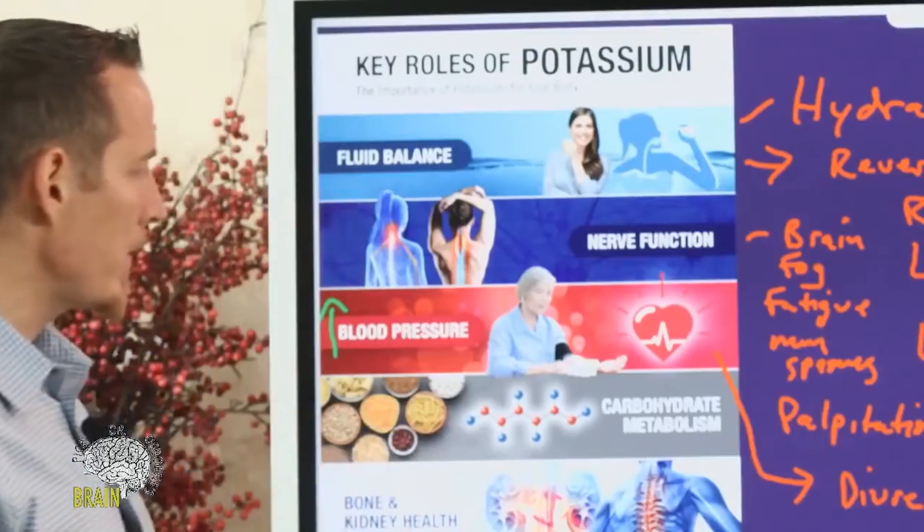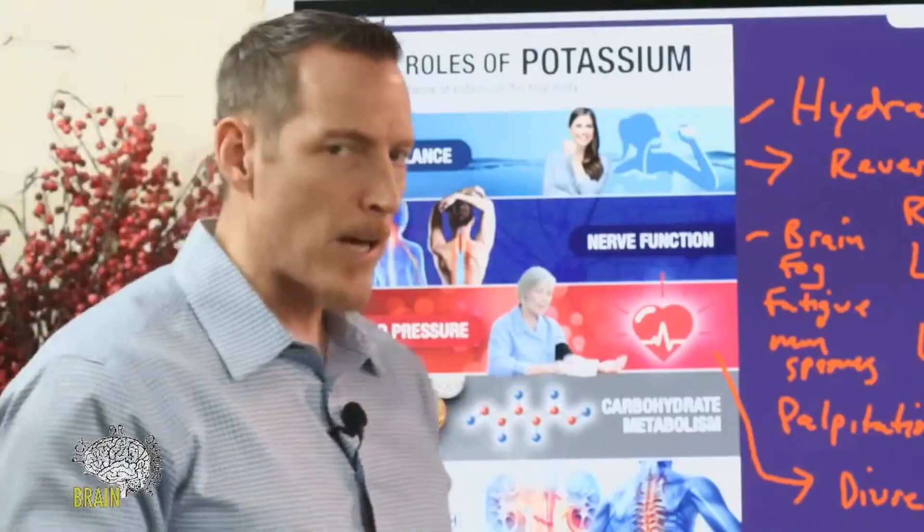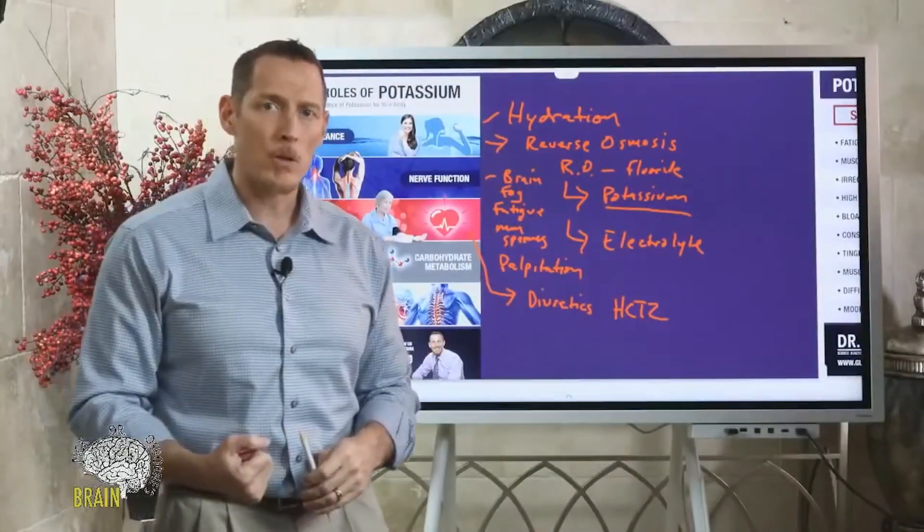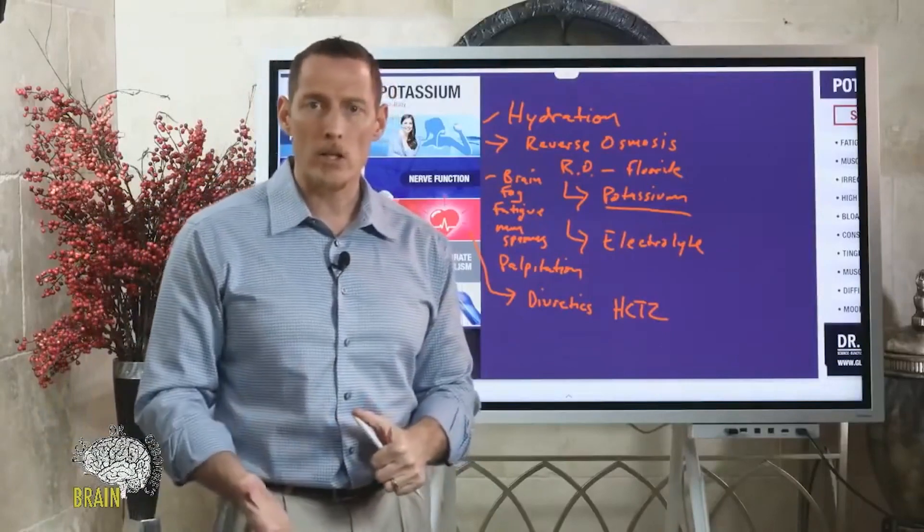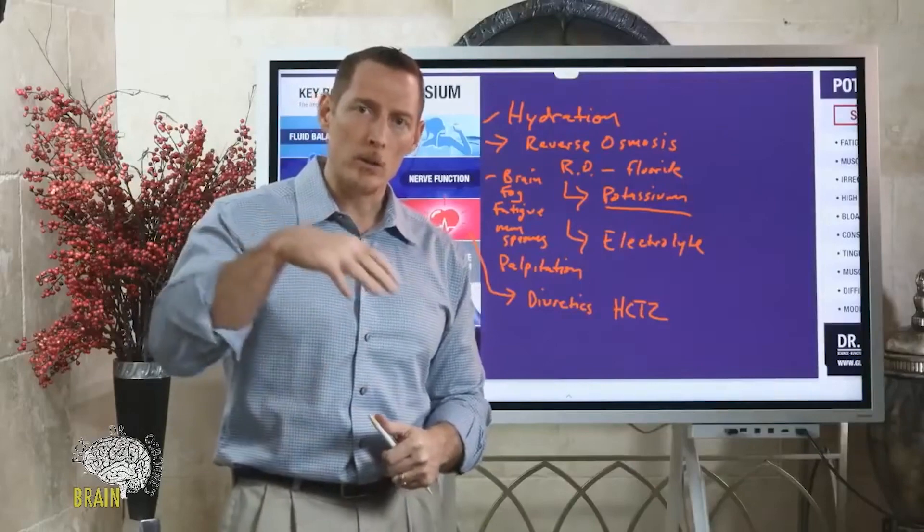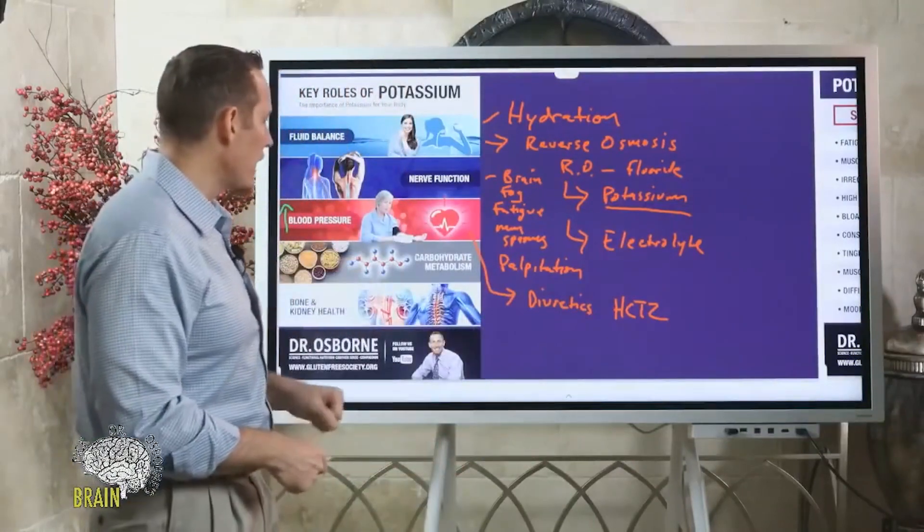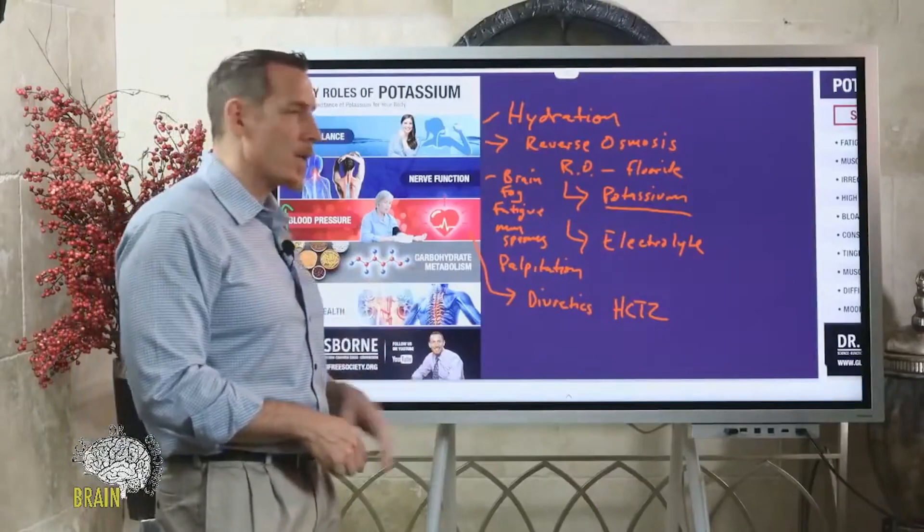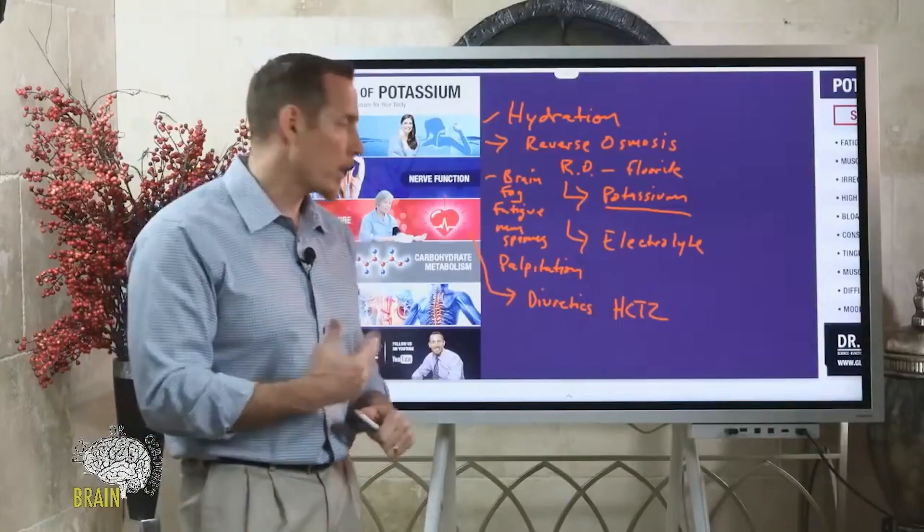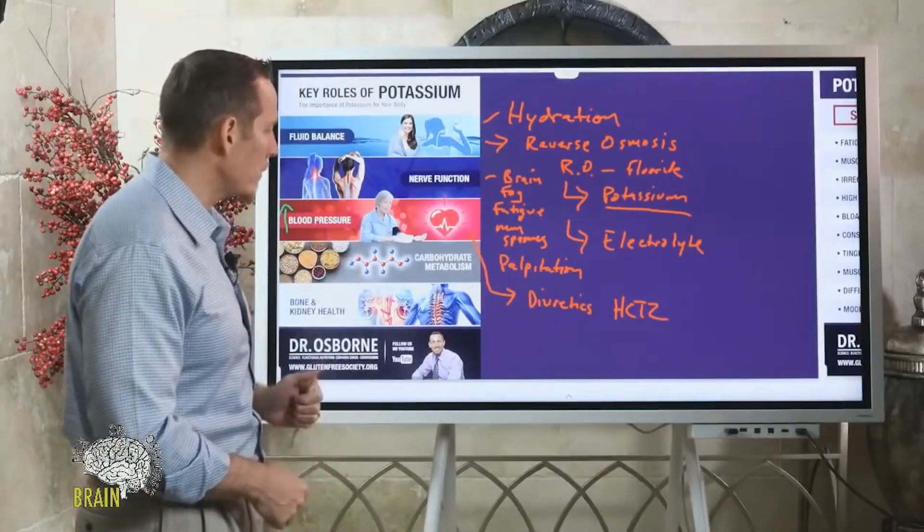In carbohydrate metabolism, potassium is critical for proper insulin production, blood sugar regulation, and for helping your body to properly store or get glucose into your cells. So low levels of potassium can lead to elevations in insulin, which can contribute to an increased risk for heart disease.